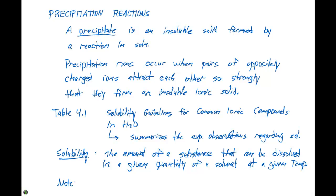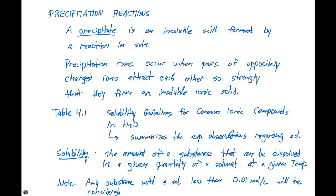I'll give this disclaimer: any substance with a solubility less than 0.01 moles per liter will be considered insoluble. We will set this as the baseline and give these overall general guidelines for precipitation reactions. In the next couple of sections, we'll look at when these precipitation reactions will occur, how we can characterize them, and how we can predict the products that will occur.